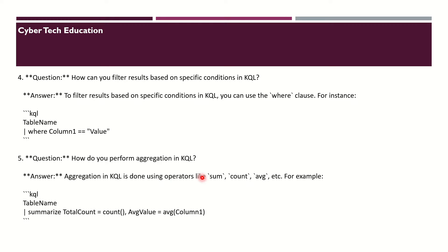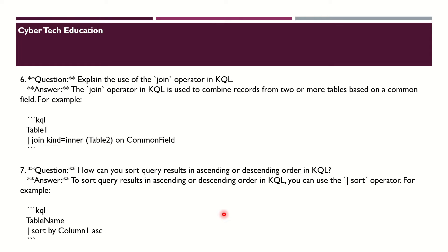The next question is: how do you perform aggregation in KQL? Aggregation in KQL is done using operators like sum, count, average, etc. For example: TableName | summarize Count = count(), AverageValue = avg(Column1). This is how we can perform aggregation operators in KQL.